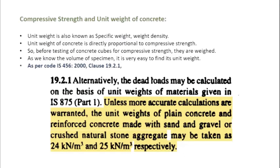Coming to the second one, the influence of the unit weight of concrete on the compressive strength of concrete. Unit weight is also known as specific weight. So unit weight of concrete is directly proportional to, of course unit weight is denoted with gamma, and this is proportional to compressive strength of concrete.